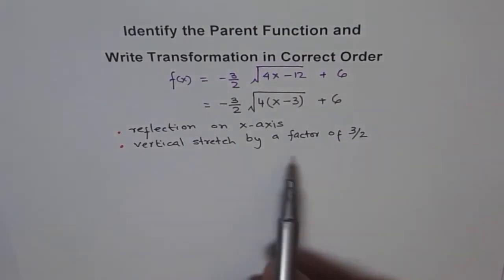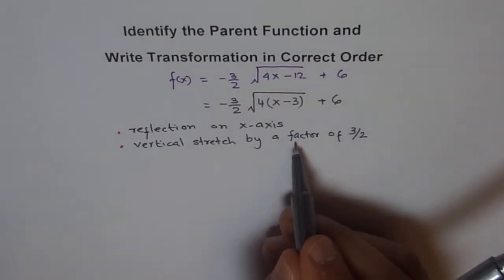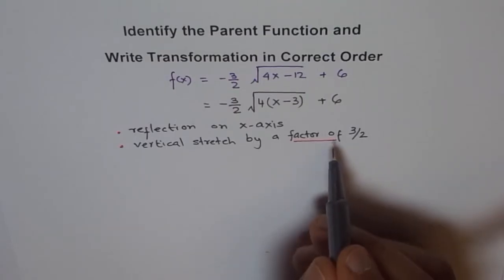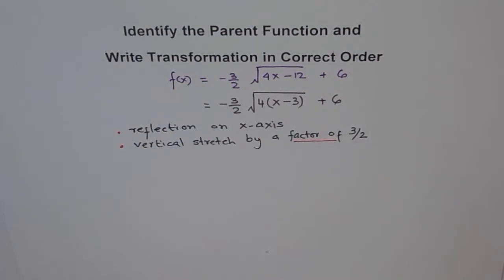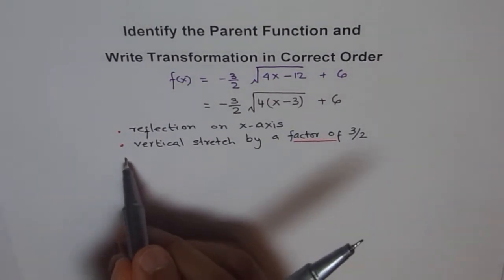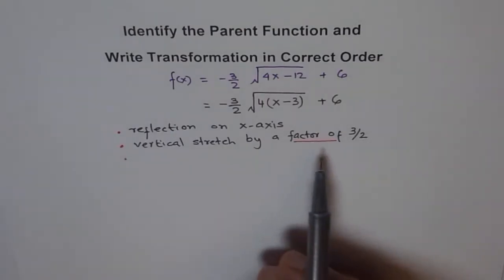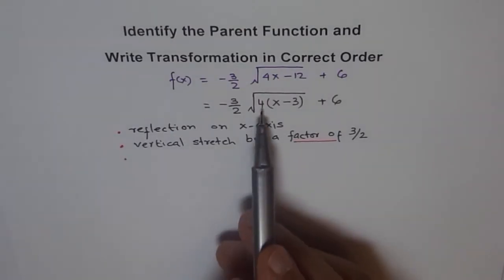In this statement, factor of is very important. Remember this. Many times students forget to write factor of and they lose marks here. Vertical stretch by a factor of 3 over 2 is most important thing in this statement. I know they know the answer, but we mark on the basis of what they write in the test paper.